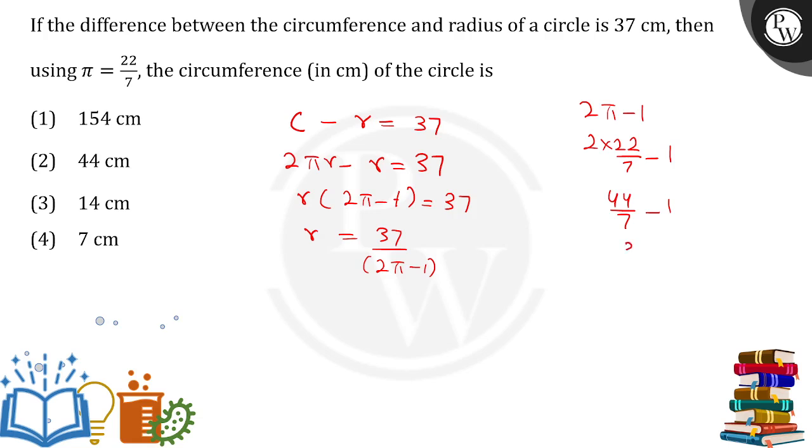Putting this value back, r = 37/(37/7) = 37 × 7/37. The 37s cancel out, giving r = 7 cm. Now we calculate the circumference.